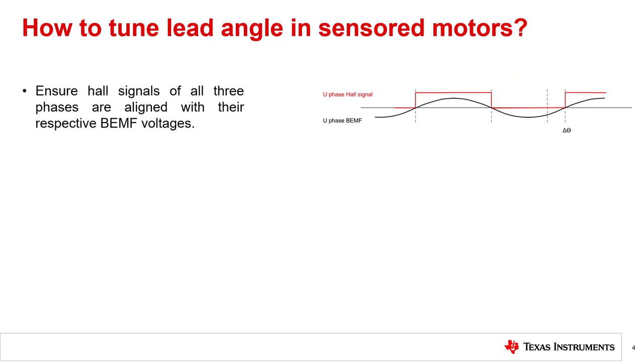In this slide we will discuss how to tune lead angle in sensored motors. In sensored motors, lead angle is tuned by aligning the back EMF voltage with motor phase current. Hall sensors in each phase should be placed such that the hall signal positive output is aligned with the respective phase back EMF voltage.